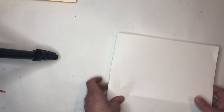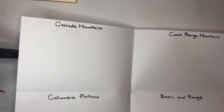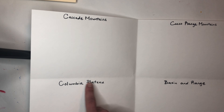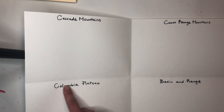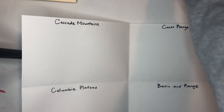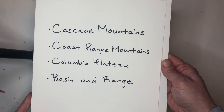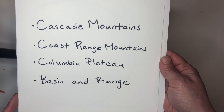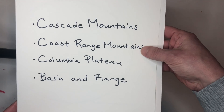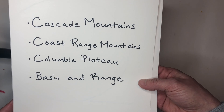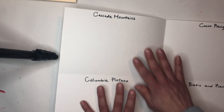Next step is going to be to label each one. Using your black Sharpie, label in each rectangle at the very top in the center. You can pause this right now to label and look at the screen. We're labeling them: Cascade Mountains, Coast Range Mountains, Columbia Plateau, and Basin and Range.